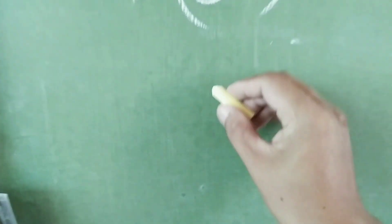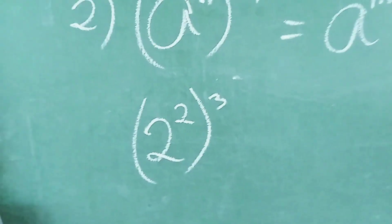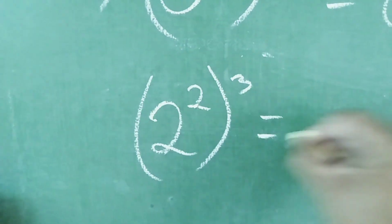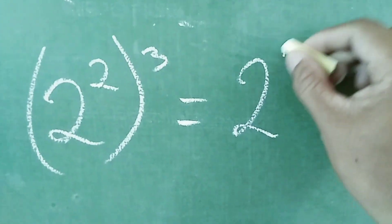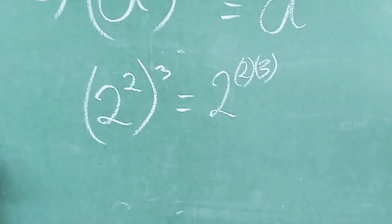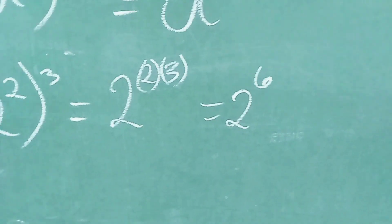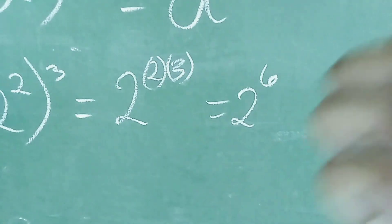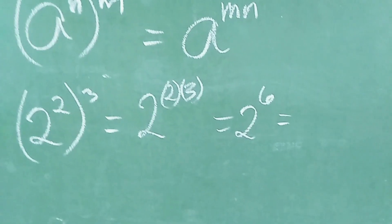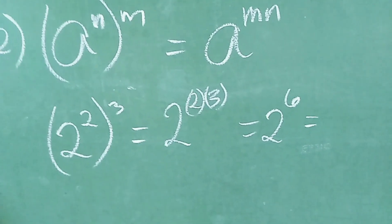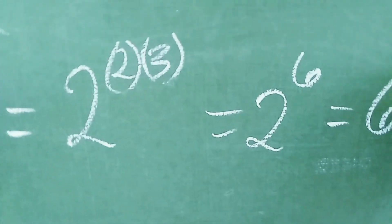Example. Magbibigyan tayo ng example. We have 2 squared, quantity cubed — 2 raised to 2, quantity cubed. So gawin natin kung ano yung ginawa natin doon sa process niya. We have 2 — copyin natin yung base, multiply the exponent. So 2 raised to 2 times 3 — multiplication yan. So we have 2 raised to 6. Again, hindi po 12 ang sagot natin. So we have 2 times 2 times 2 times 2 times 2 times 2 — 6 times to itself. 2×2=4, 4×2=8, 8×2=16, 16×2=32, 32×2=64. Ang sagot po natin dito is 64.